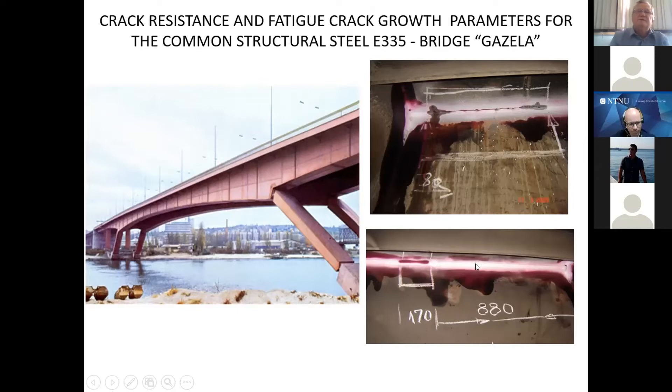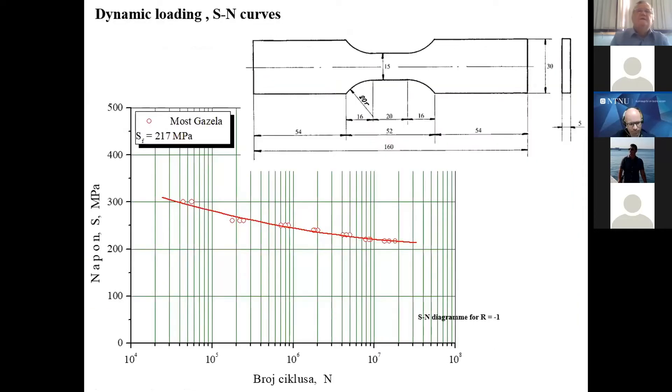So something had to be done. And that was in the scope of the whole experimental procedure applied, that was dynamic loading. First, for standard specimens without crack, so that SN curves were obtained. It was done both for base metal and for welded joint. You can see here that fatigue strength for base metal is 217, which is relatively high for this type of steel with yield strength of about 355.